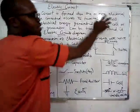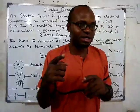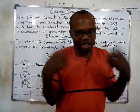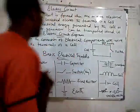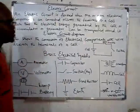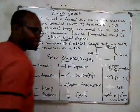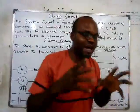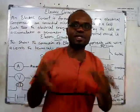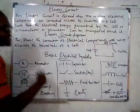So an electric circuit is formed when one or more electrical components are connected across the terminals of a cell, so that the charges generated by the cell, accumulator, or generator can be transported. We draw the diagram of an electric circuit using symbols representing the basic electrical components. In subsequent classes we are going to be drawing elaborate circuit diagrams using these electrical symbols.